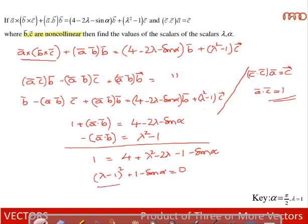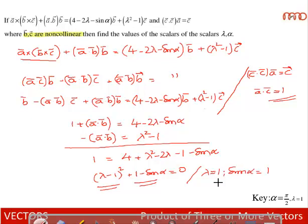This simplifies to (λ − 1)² + (1 − sinα) = 0. Since (λ − 1)² and (1 − sinα) are both non-negative — sinα ≤ 1 always, and (λ−1)² is a perfect square — the sum equals zero only when each term is zero. So λ = 1 and sinα = 1, giving us the values of both α and λ.